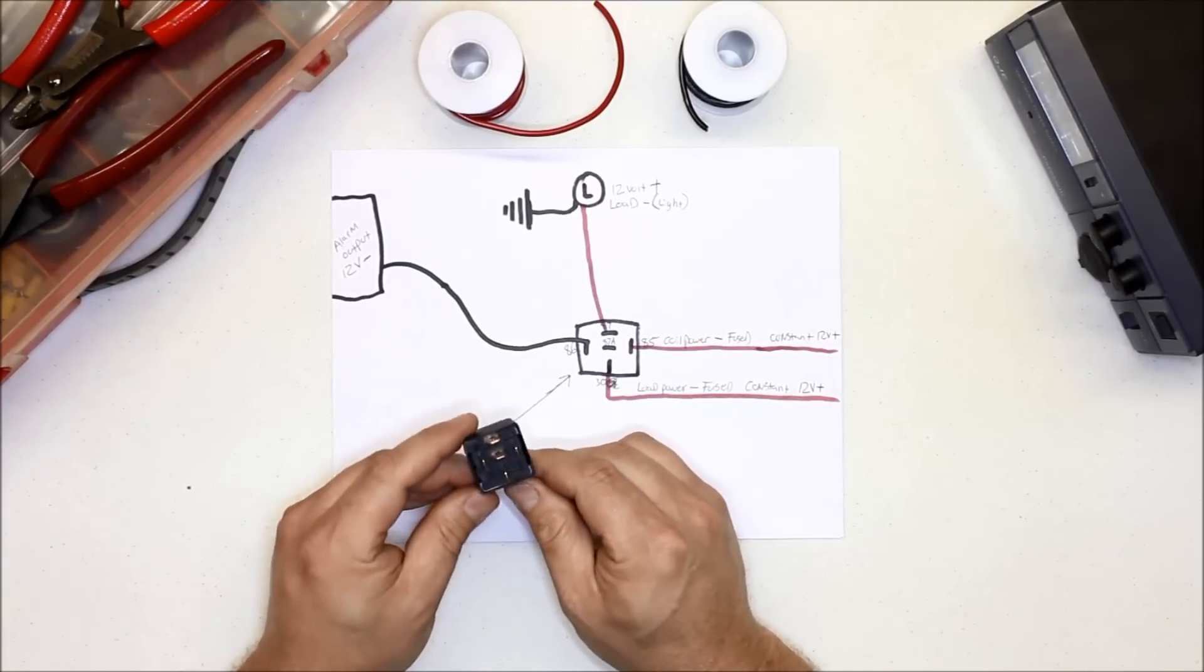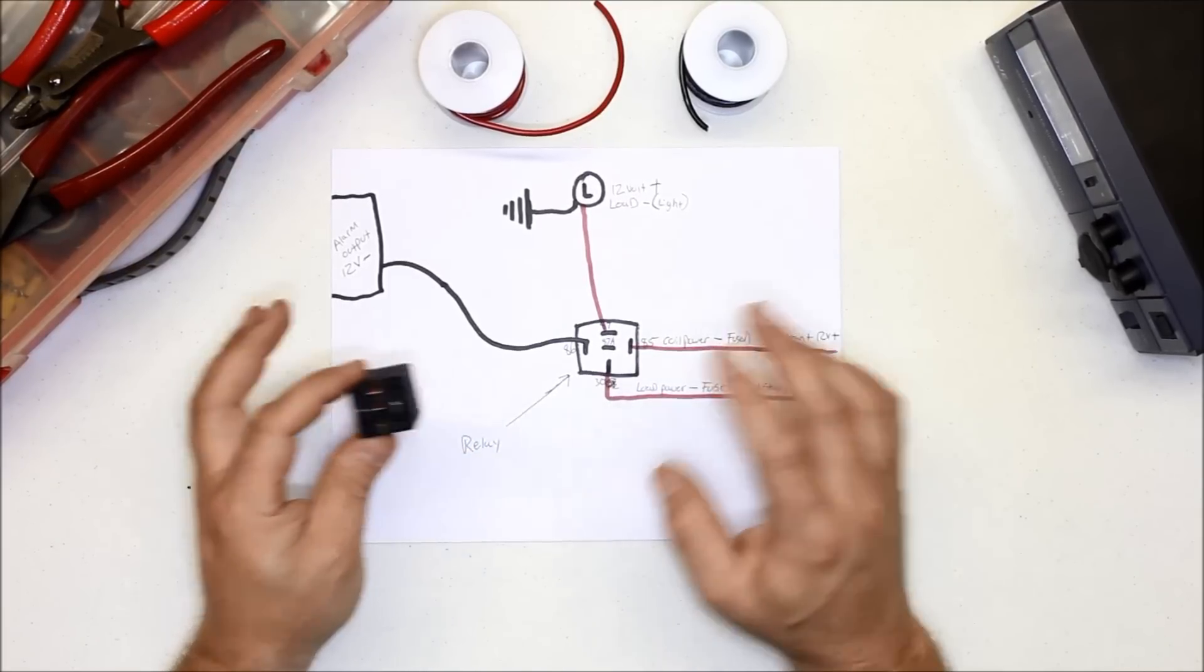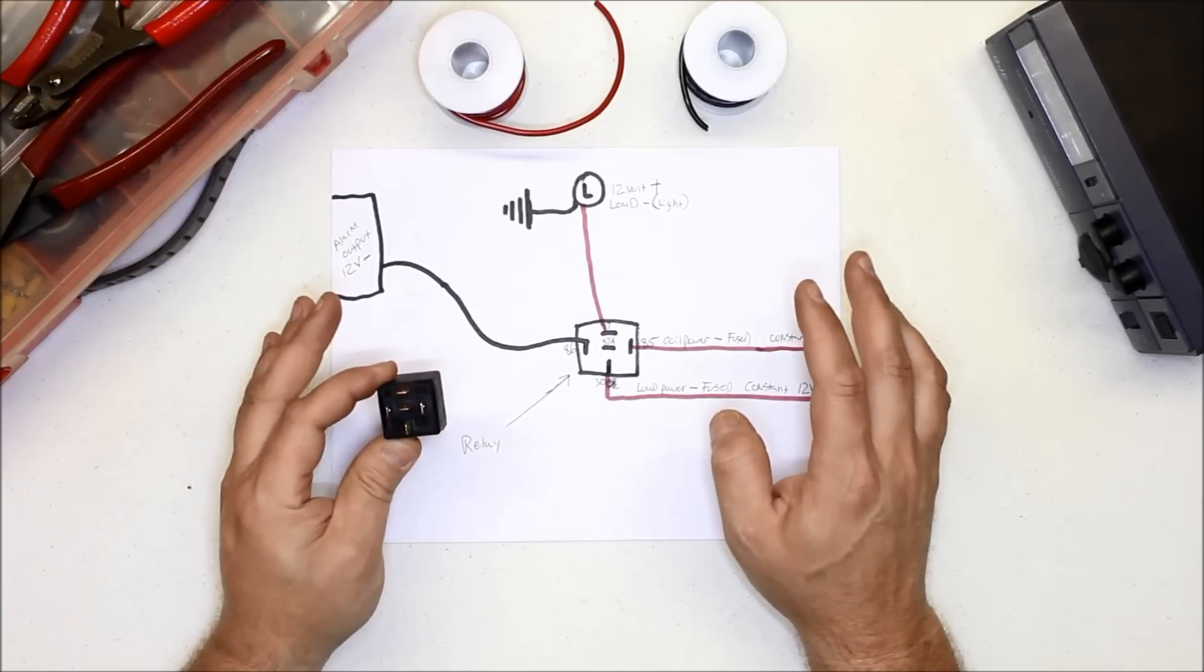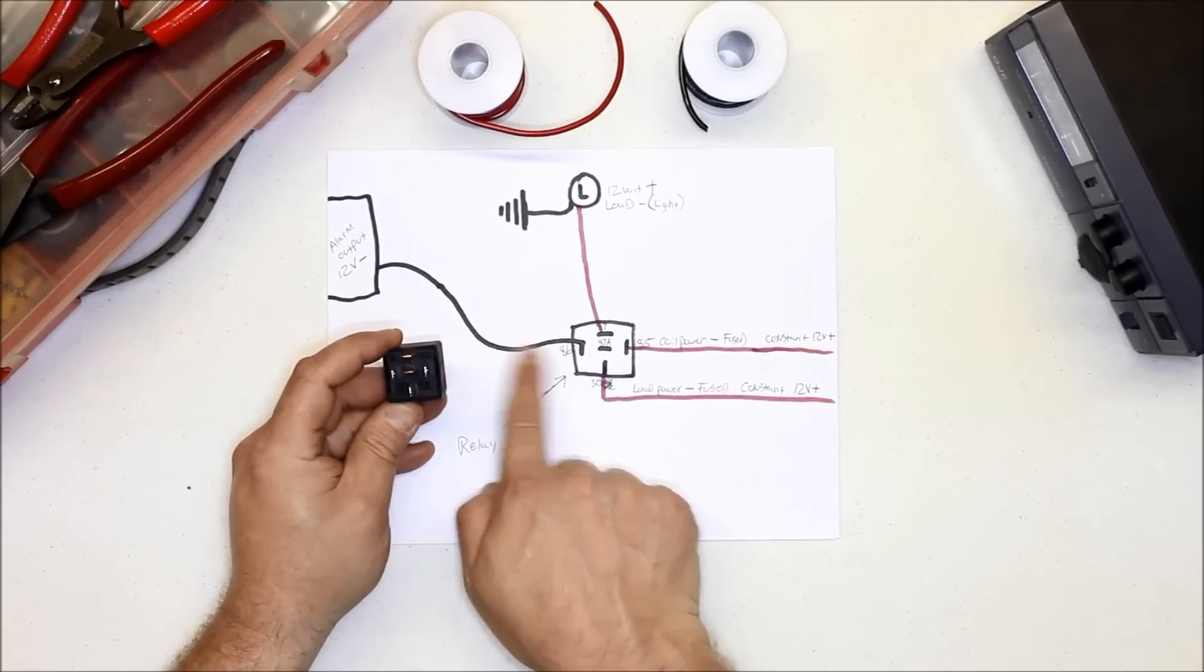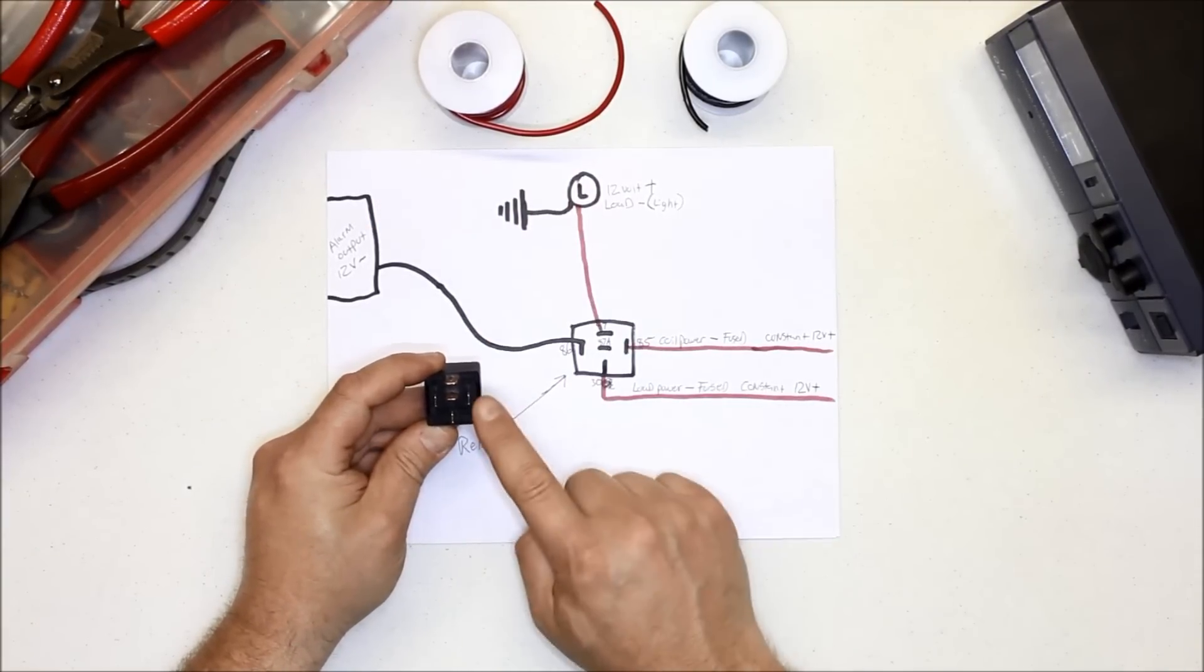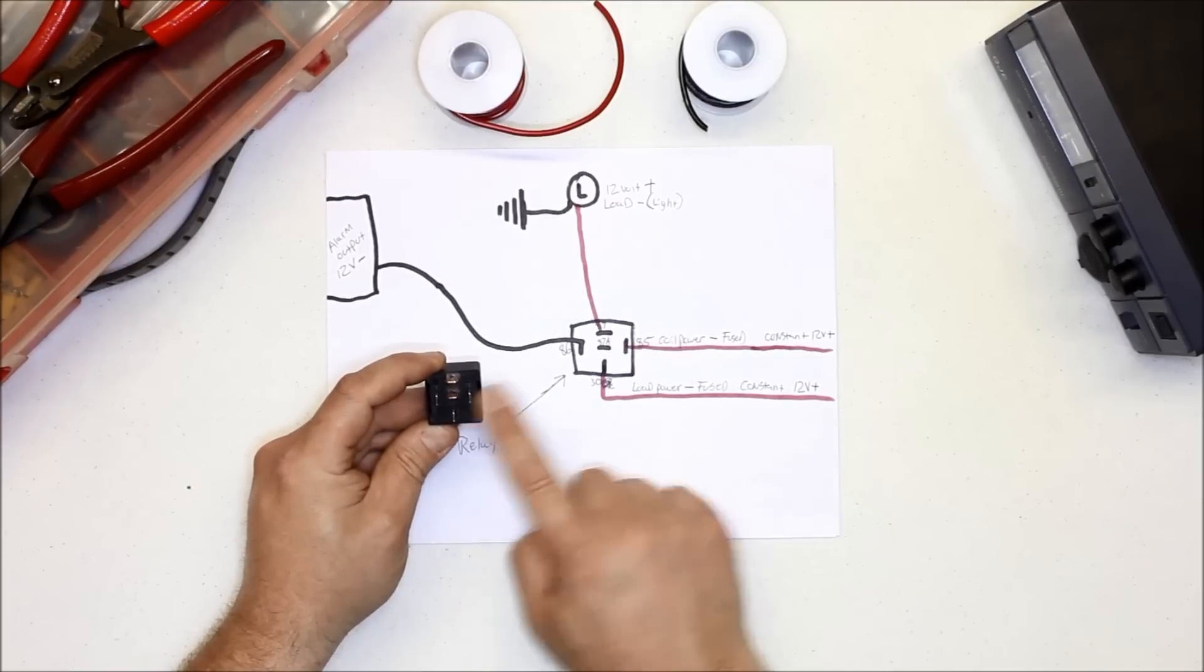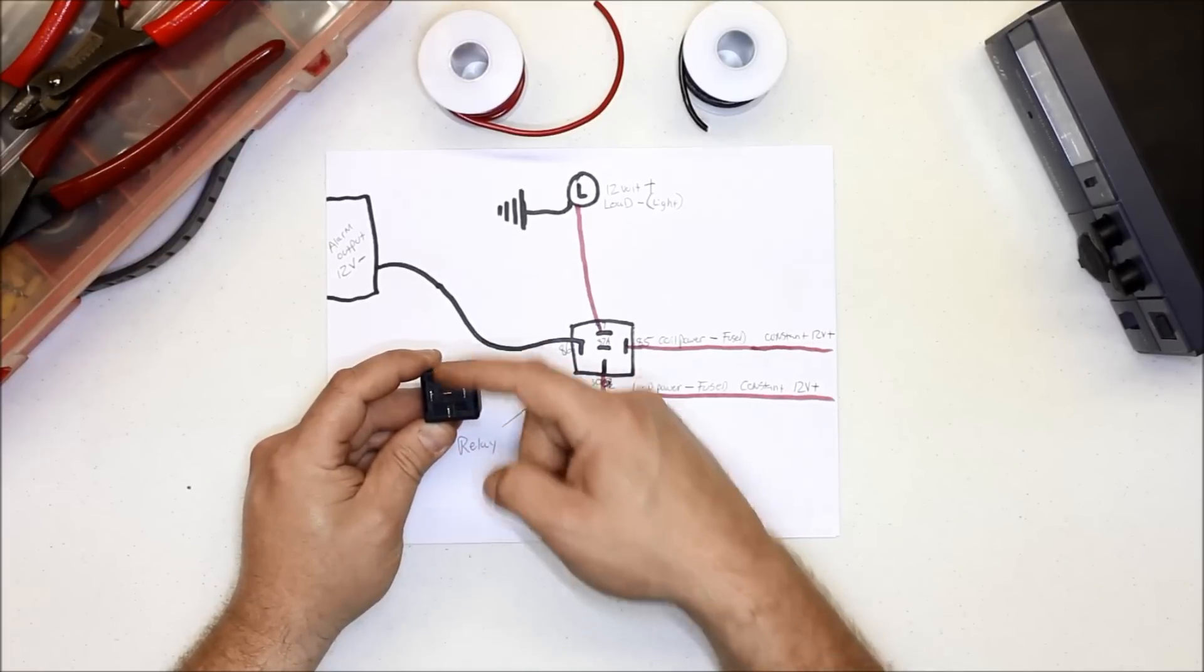For converting a negative output into a positive output, this is how you would do it. So again, the negative to one side of the coil from your aftermarket box, then your positive would go to a 12 volt constant fused positive. Make sure everything in a vehicle is fused so you don't burn your vehicle down.